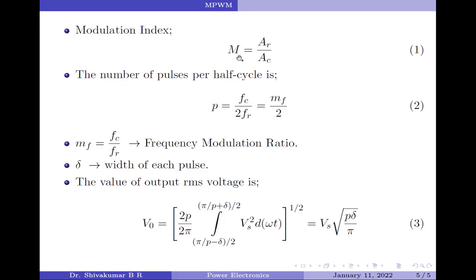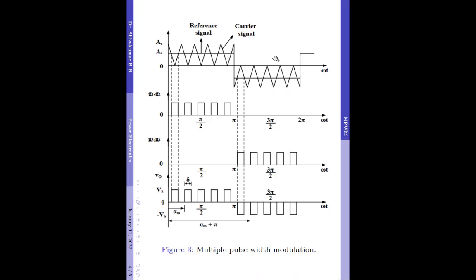On the other hand, when the modulation index value is 1, which happens when AR equals AC, the width of each pulse will be pi divided by P. Why pi divided by P? Because we have P pulses distributed across one pi, therefore the width of each pulse will be pi divided by P. Furthermore, you should also notice that in the Multiple Pulse Width Modulation Technique, the widths of each pulse generated are exactly equal. Due to this reason, the Multiple Pulse Width Modulation Technique is also called the Uniform Pulse Width Modulation Technique.